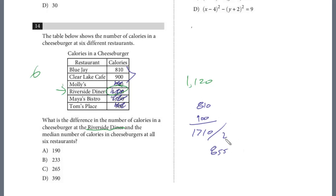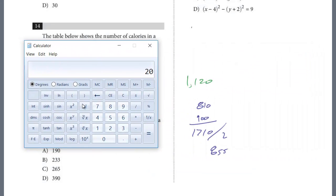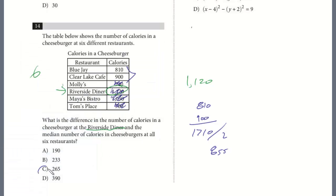Just use your calculator. So we're just looking at the difference from 1120 minus 855. And this will give us the difference, the answer. It's 265C.